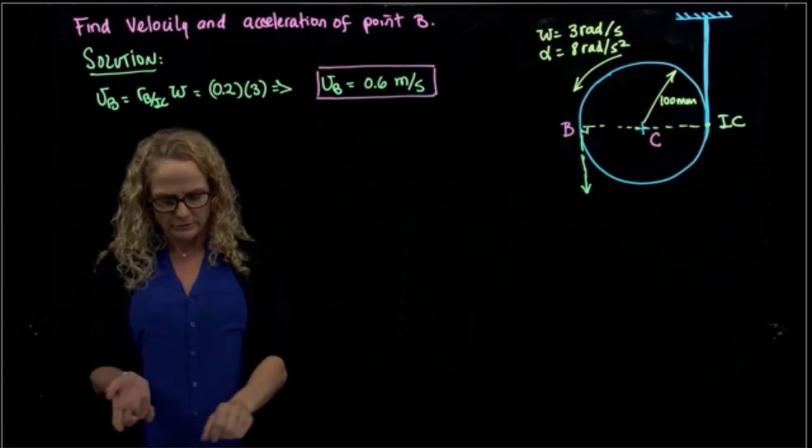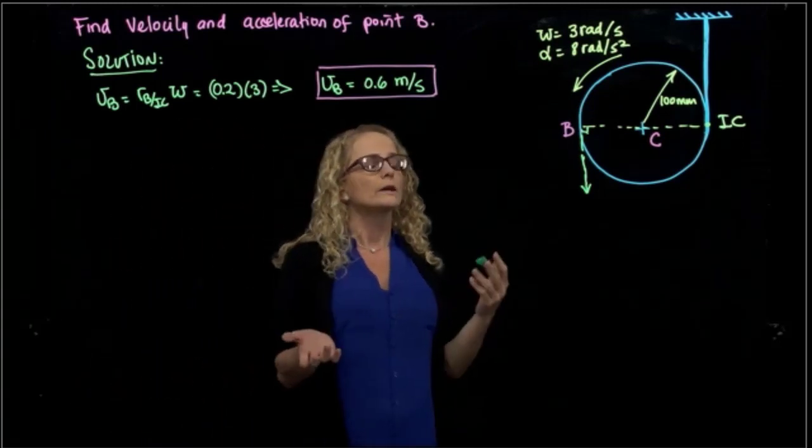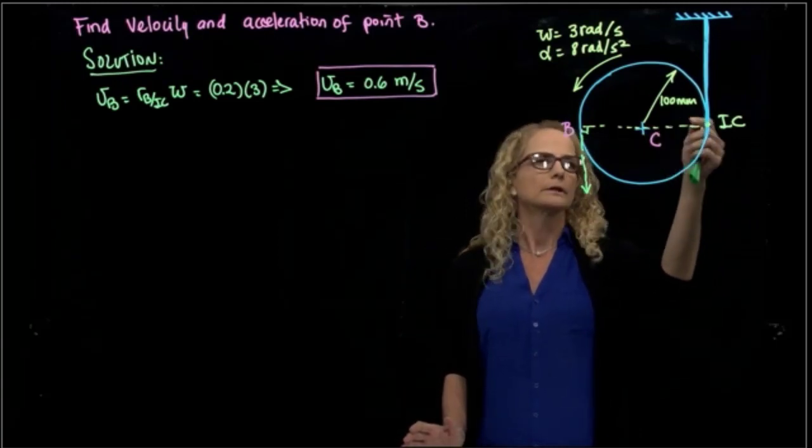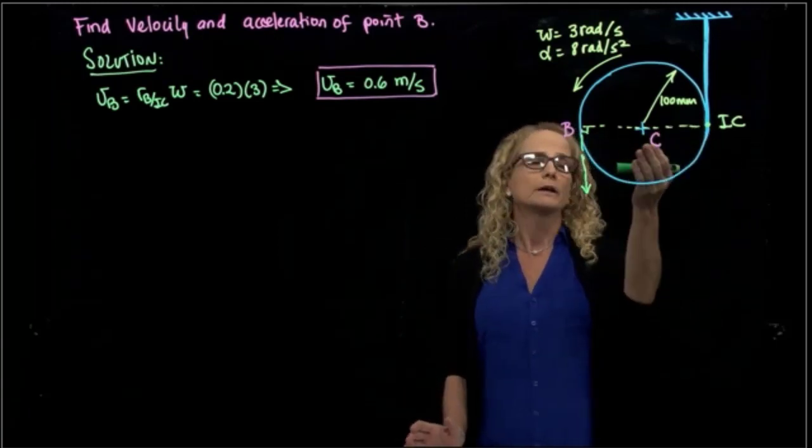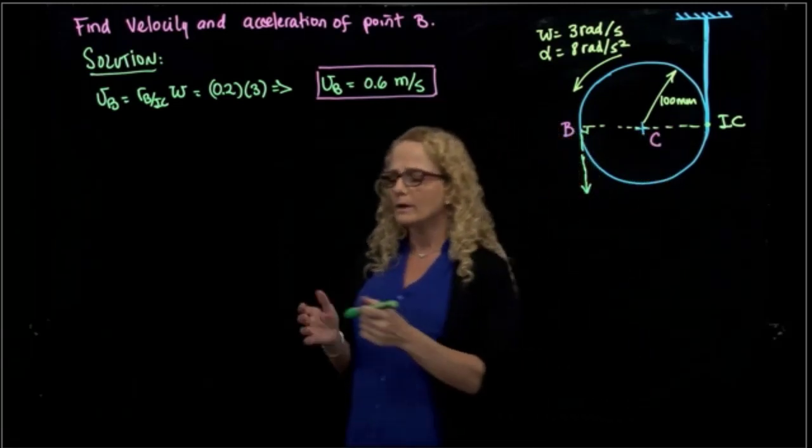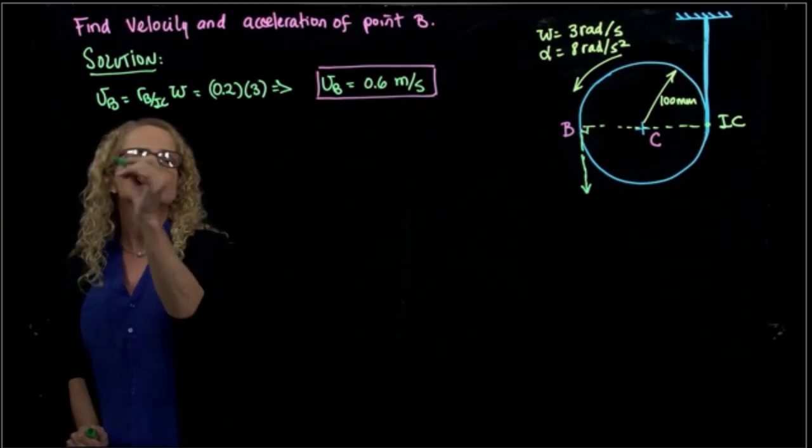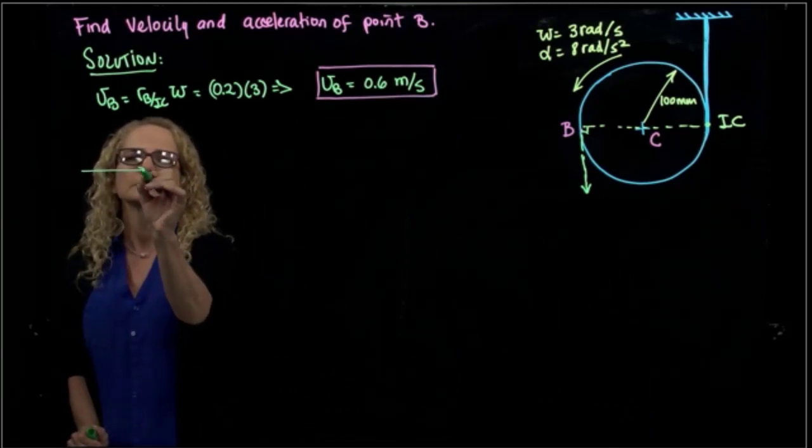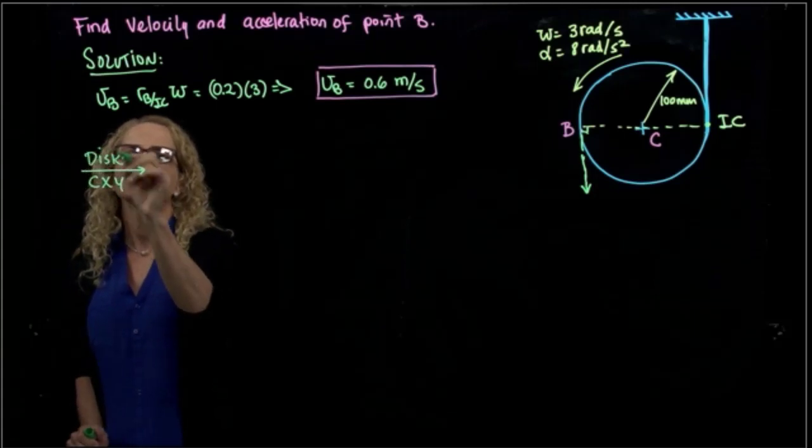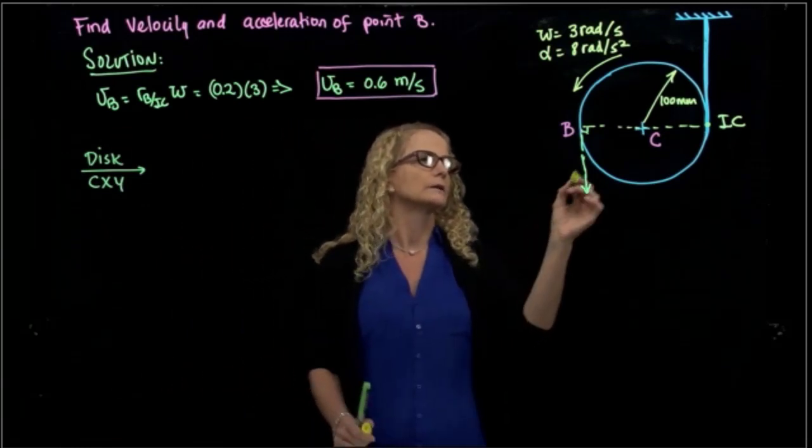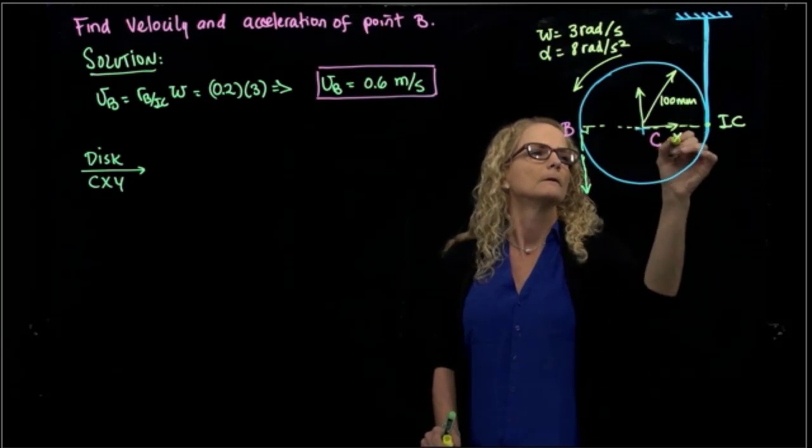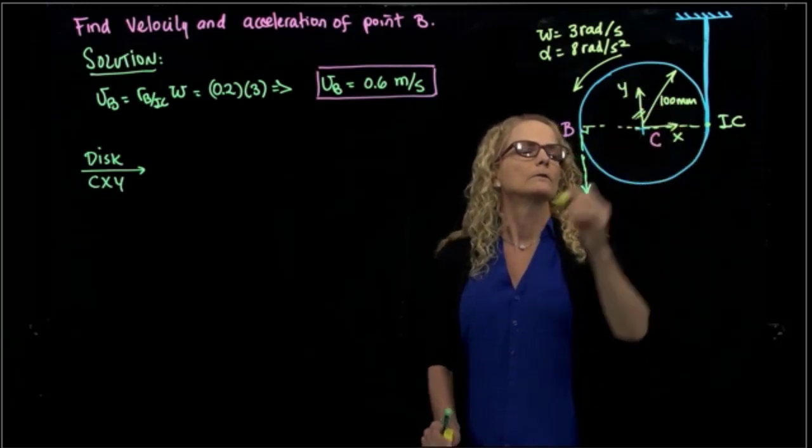To find the acceleration of point B, we can do it in different ways. I have done other problems where I set the coordinate system in instantaneous center of rotation. We can actually set it also in point C. So if we want to calculate the acceleration, let's use a fixed coordinate system to the disc, but using one point, maybe not in the instantaneous center of rotation, but in point C to see how it goes.